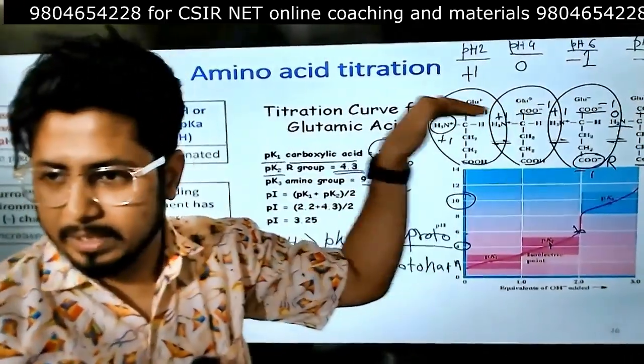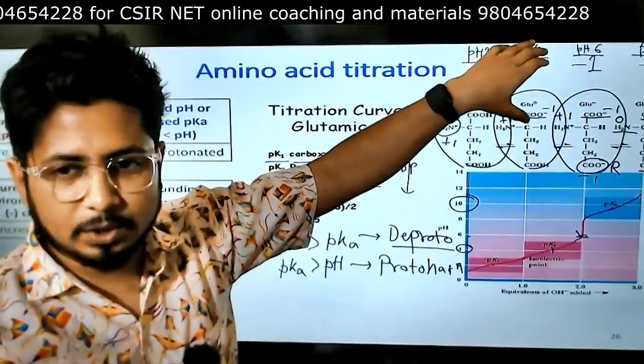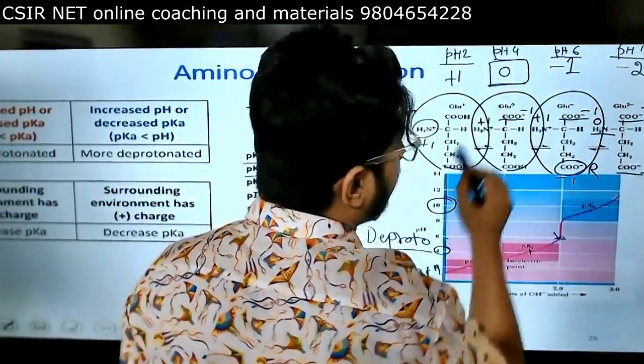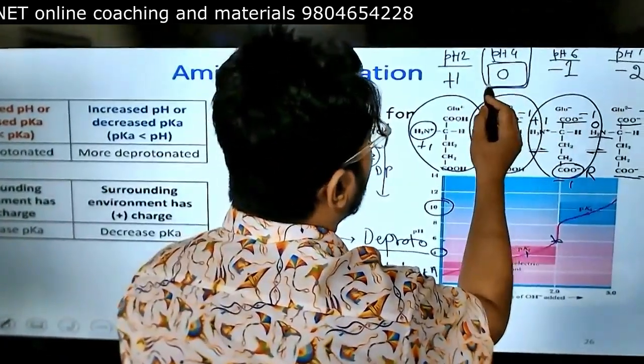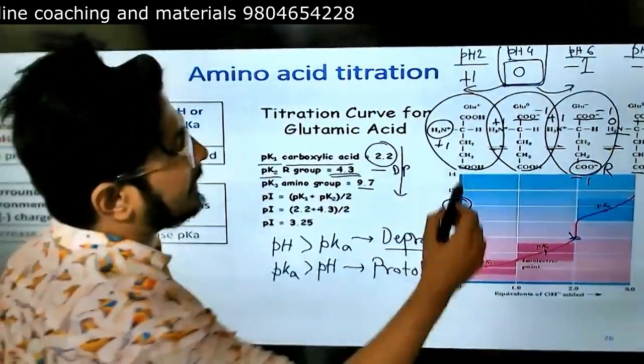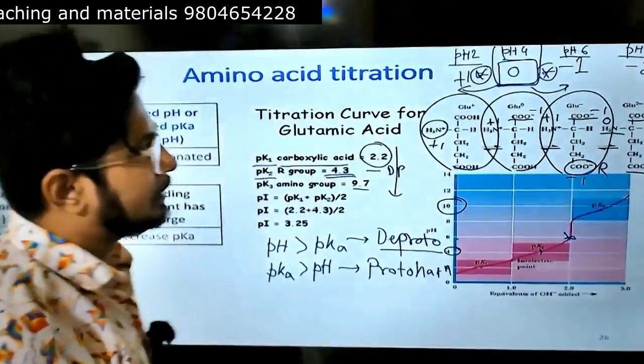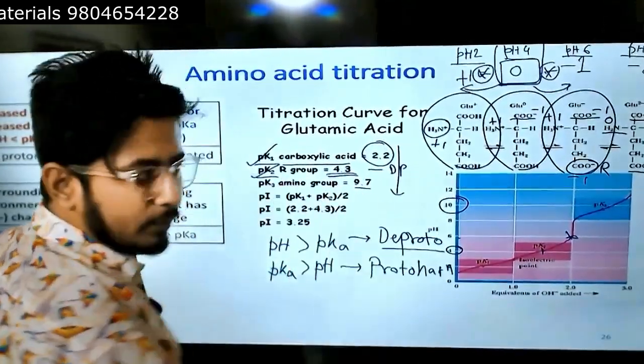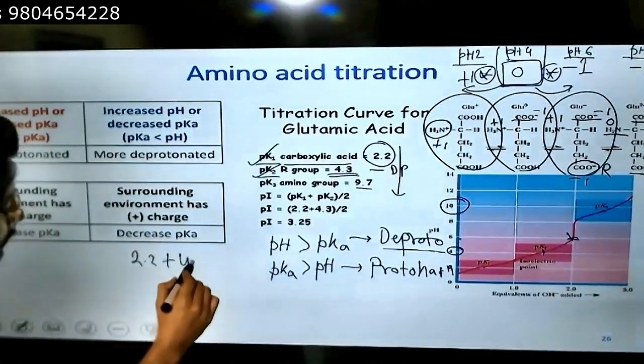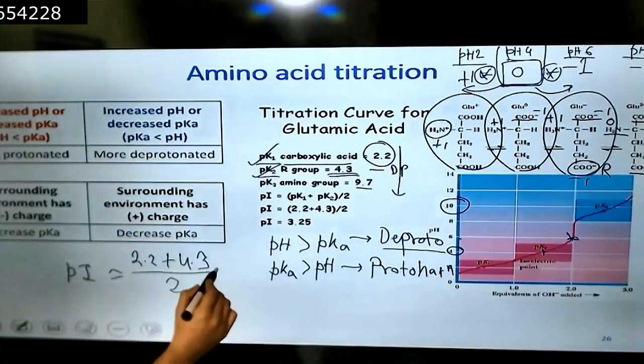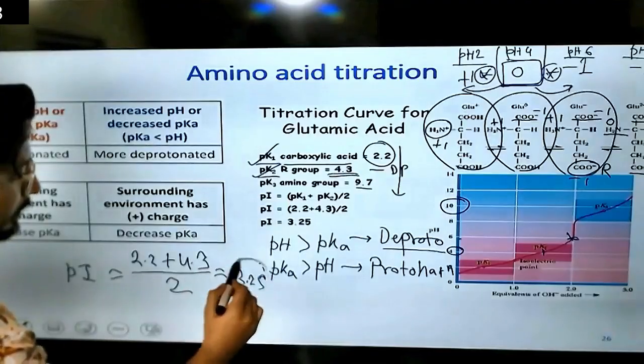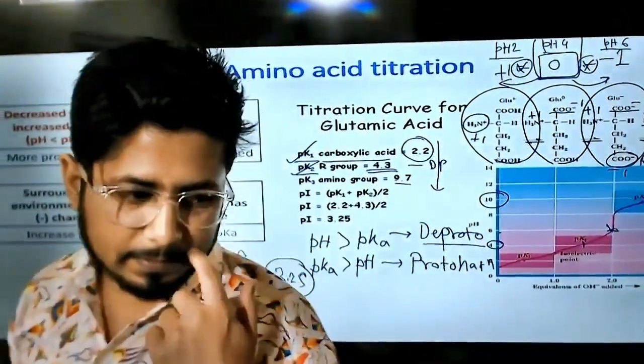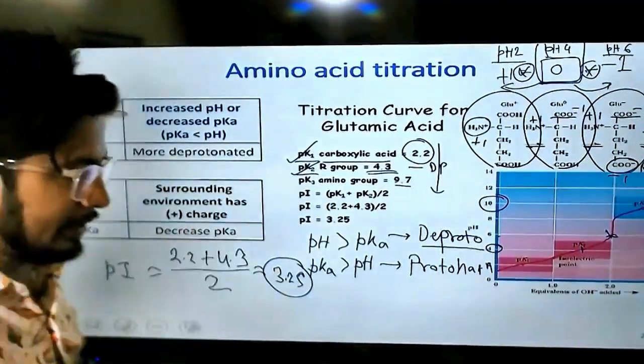This is the journey of this amino acid charge - starting with plus 1, then became 0, then minus 1, then minus 2. Among them, which is the zwitterionic form? This one at pH 4. So we will take one value up and one value down. We will take this pKa here and this pKa here. For which pKa it got 1 to 0? pKa1 2.2. For which pKa got 0 to minus 1? pKa 4.3. So we will take 2.2 plus 4.3 divided by 2. That will be our pI - 3.25. This will be the pI value of glutamic acid.